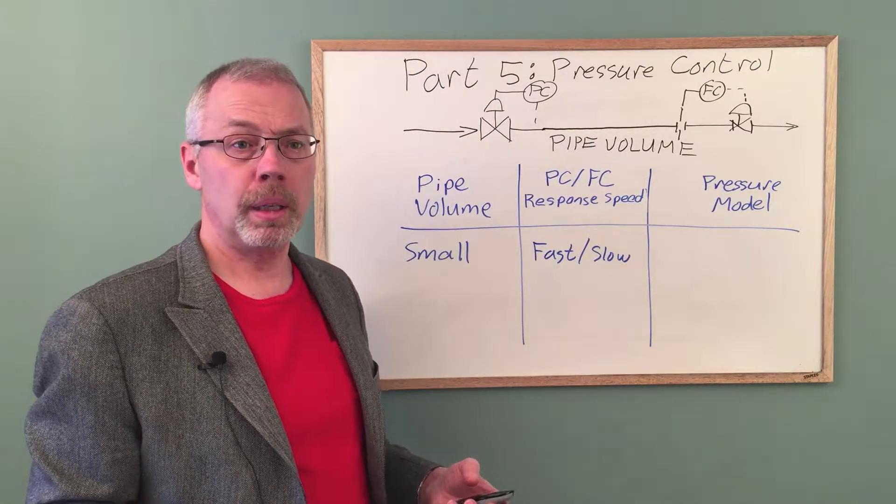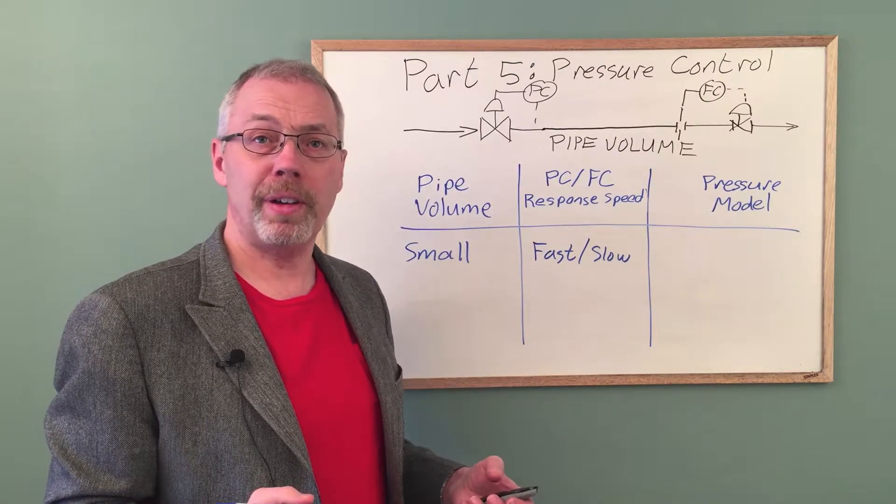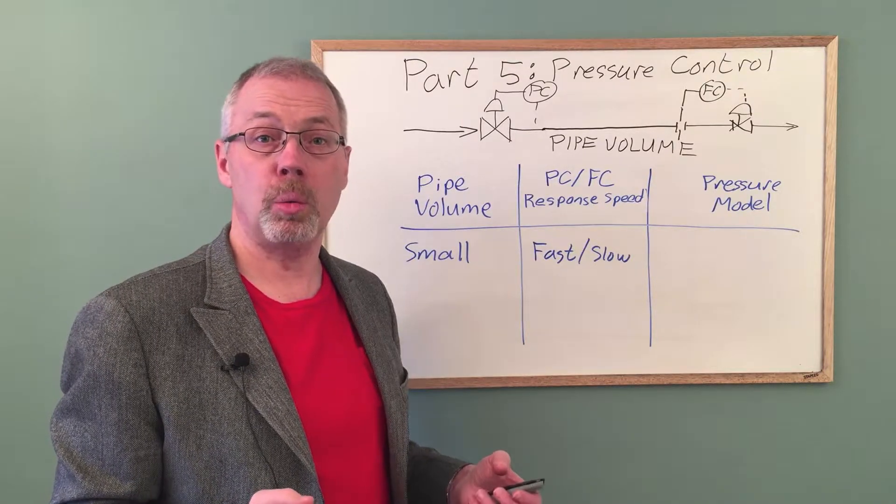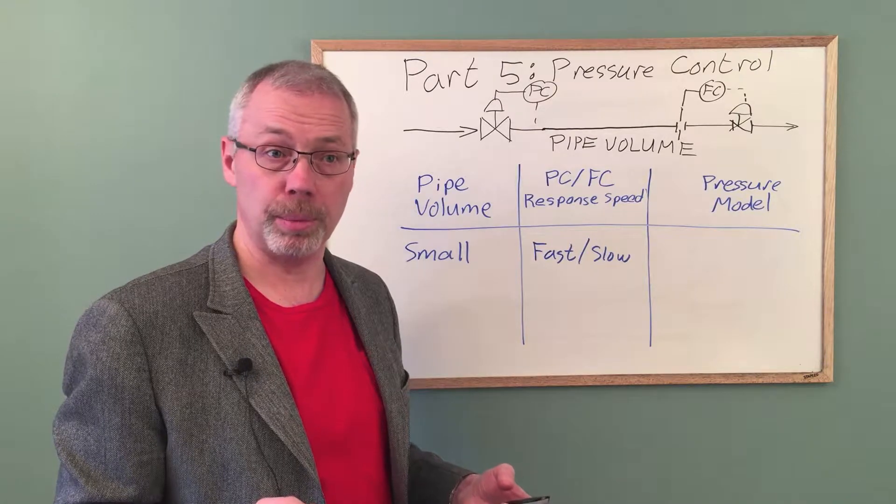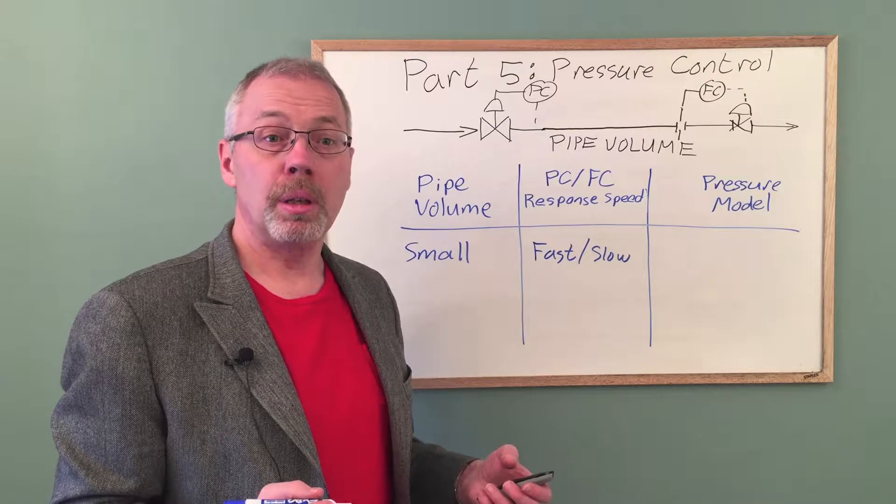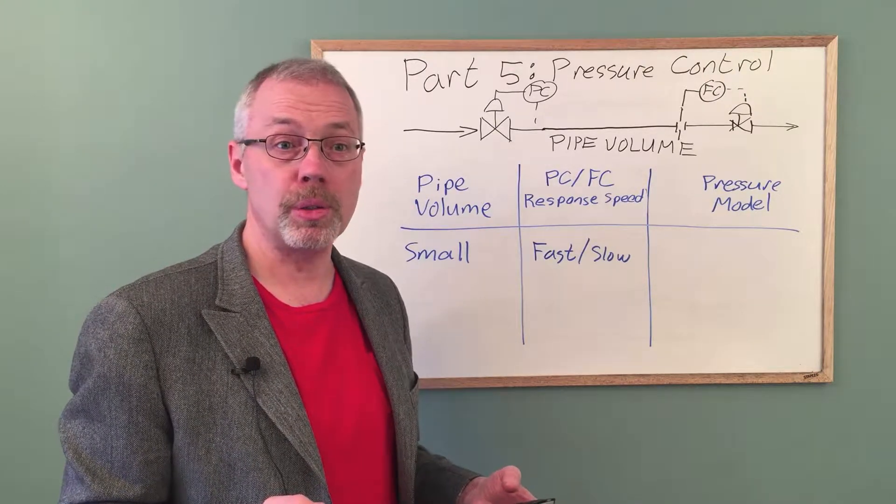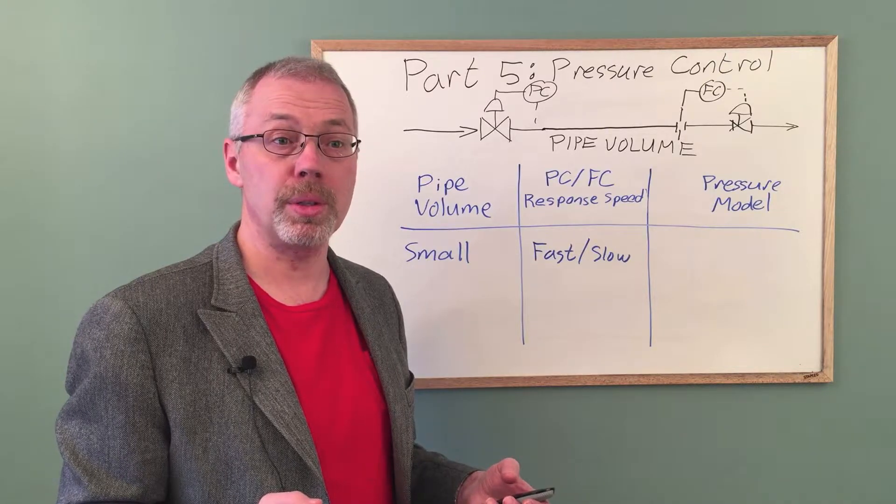How will the pressure respond? Since the flow controller is slower, let's assume that the flow valve position does not change while the pressure controller is in action. The pressure valve opens up and admits more fuel gas. The pressure in the pipe volume increases and the outlet flow increases. Everything levels out to a steady value.